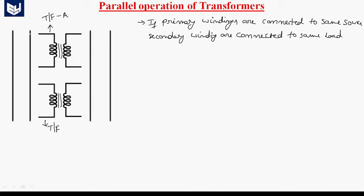This is the primary winding of the first transformer and this is the primary winding of the second transformer. These two are connected to the same source. The secondaries are connected to the same load — the secondary terminals are connected to the same load like this. We can connect the load to this parallel combination. This is called the parallel operation of transformers.